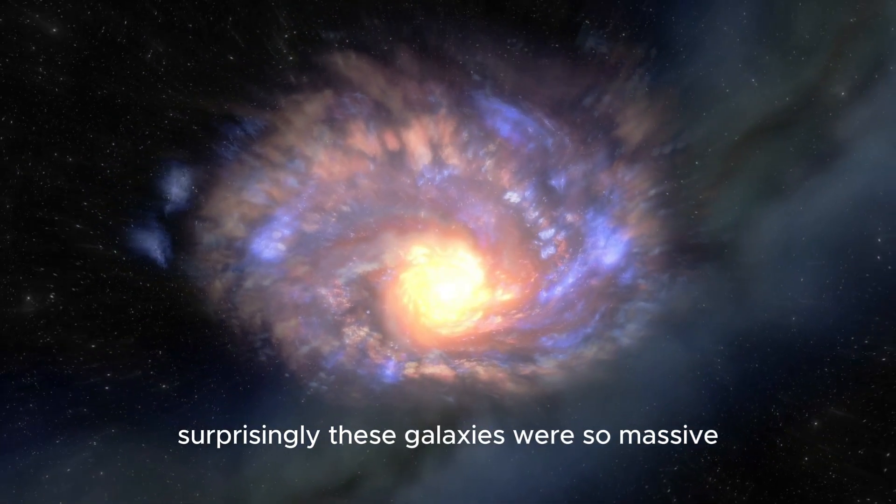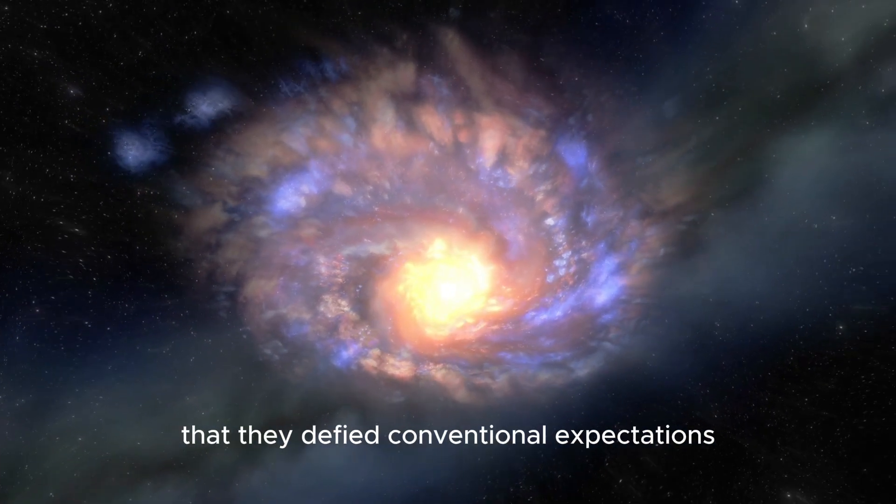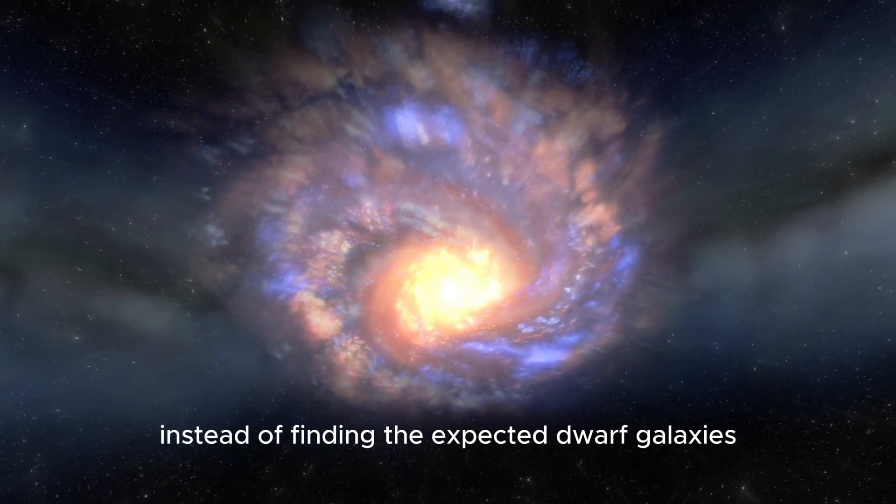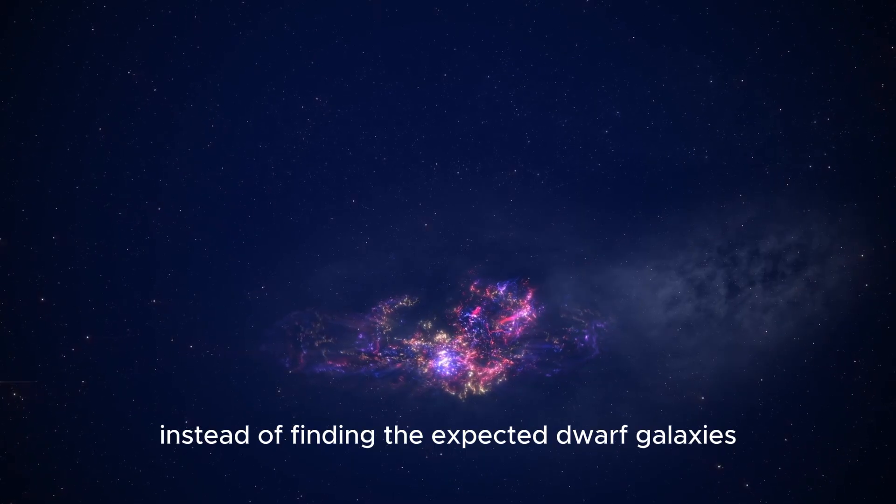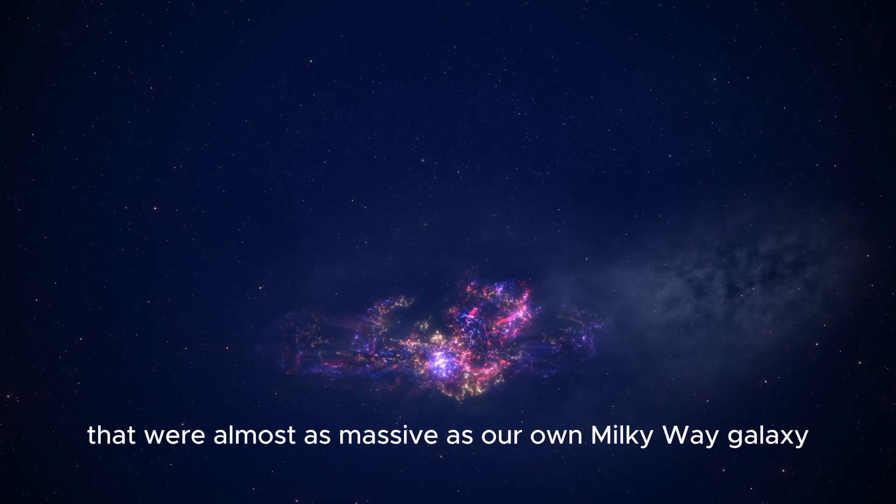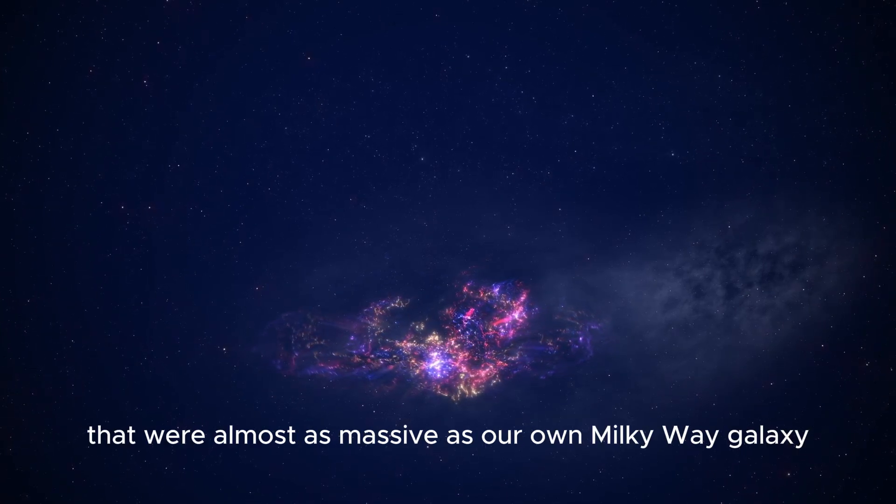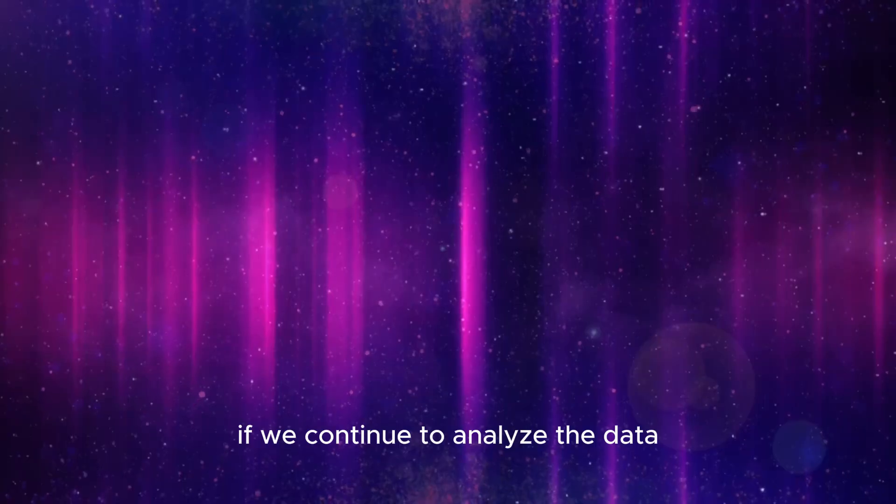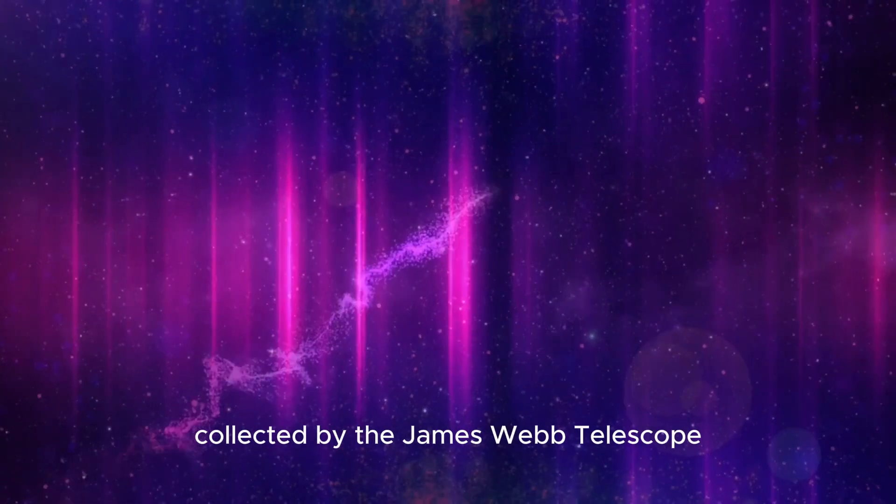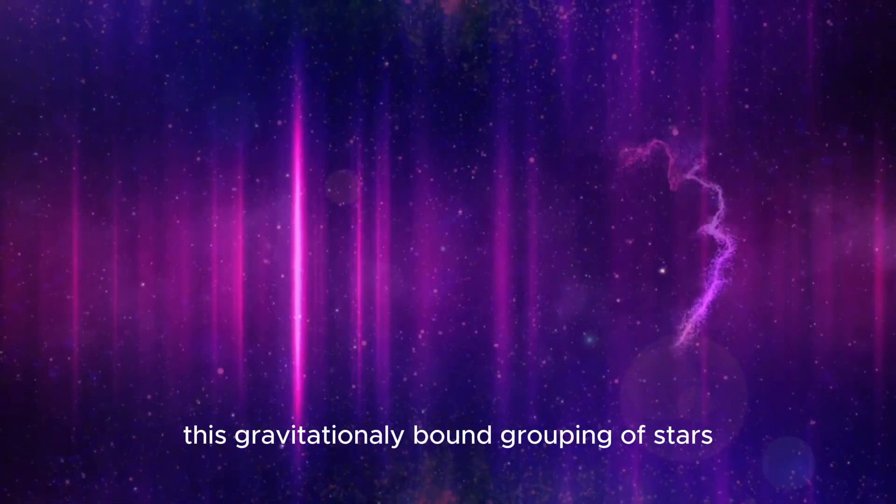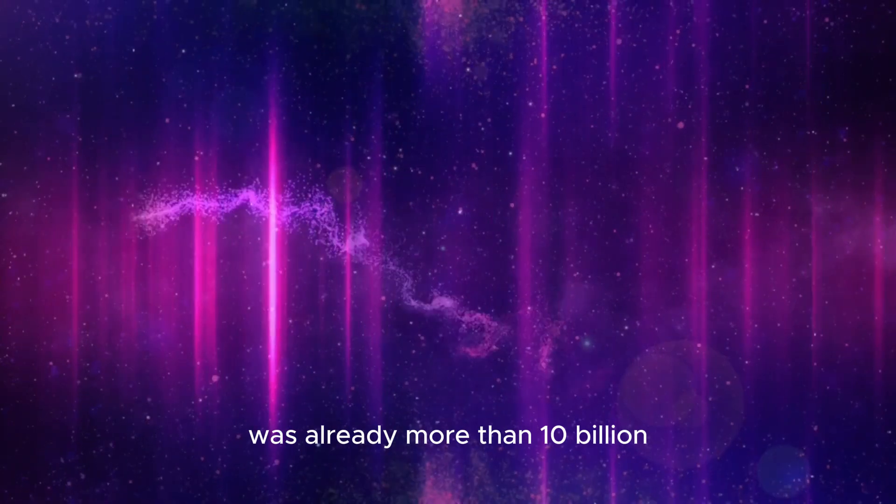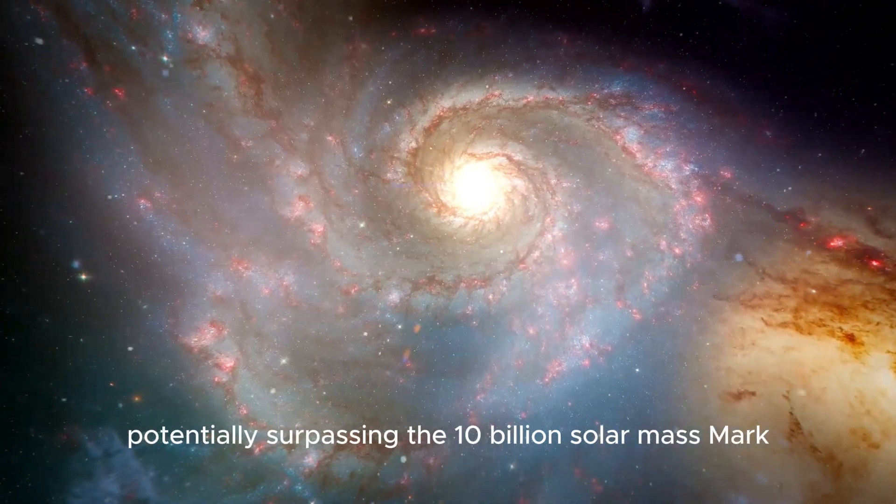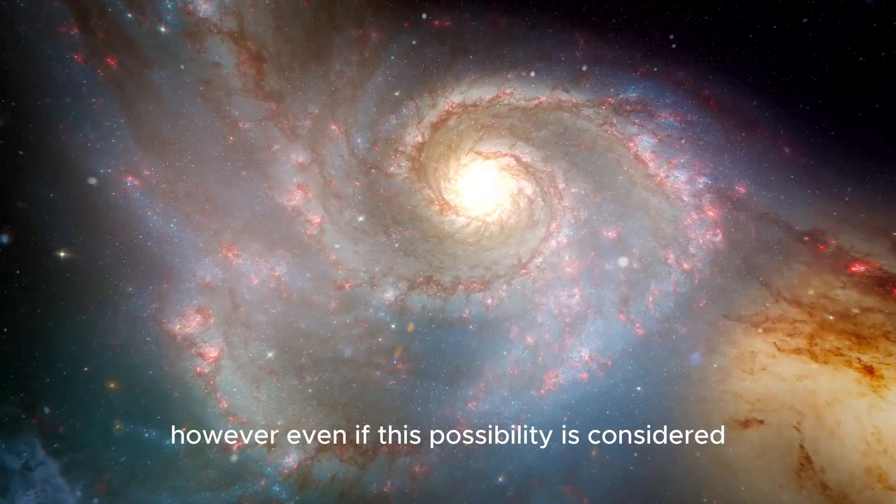Surprisingly, these galaxies were so massive that they defied conventional expectations of cosmology. Instead of finding the expected dwarf galaxies, structures were identified that were almost as massive as our own Milky Way galaxy despite having formed early in the epoch. This gravitationally bound grouping of stars was already more than 10 billion times the mass of the Sun at that time, with one potentially surpassing the 10 billion solar mass mark.